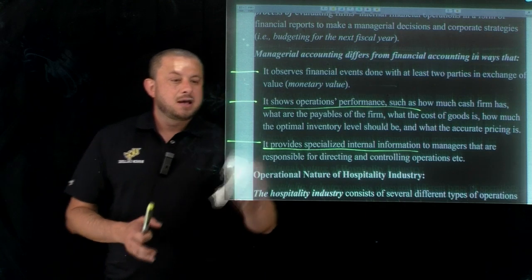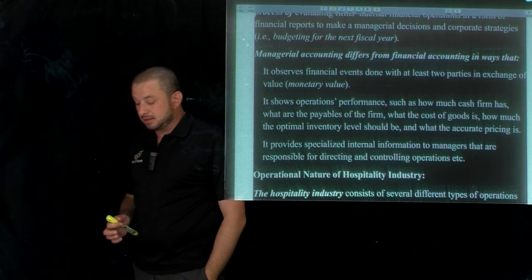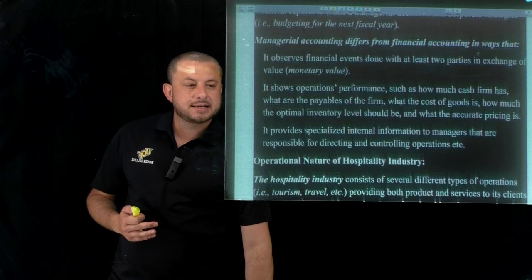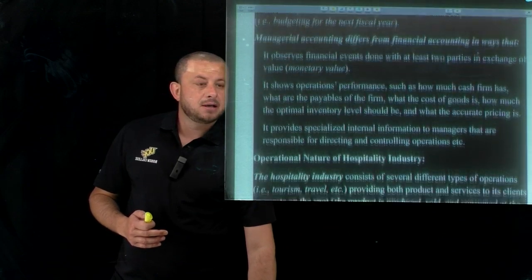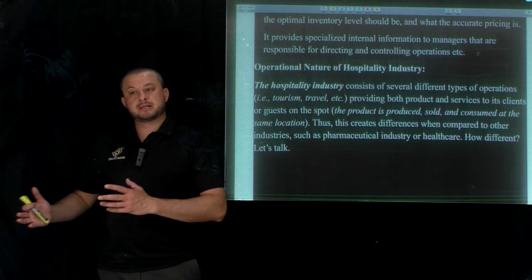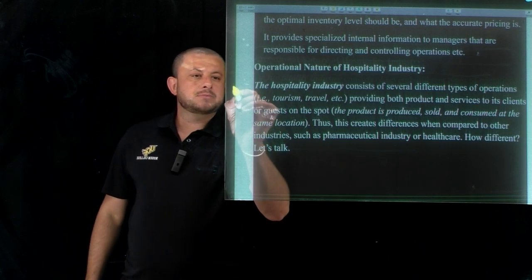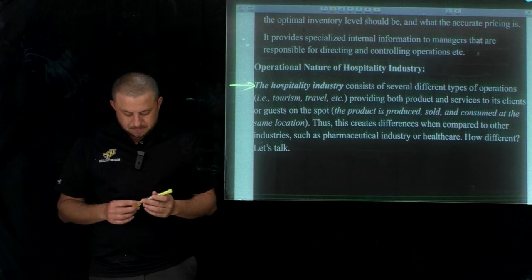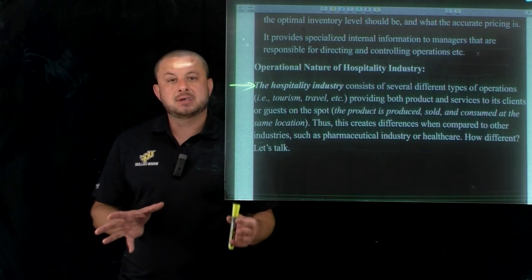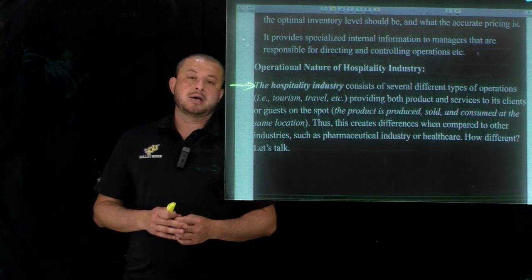Now, the operational nature of the hospitality industry. We have many dynamics, features, and characteristics in hospitality. It differs across sub-sectors — for example, operational analysis is different between restaurants and hotel operations, or restaurants versus cruise lines, event companies versus casinos. The operational characteristics of the hospitality industry are unique for every single sub-sector. One key trait: we have production and consumption happening at the same time.